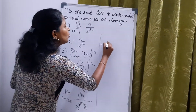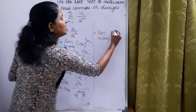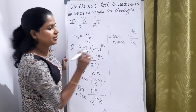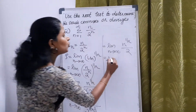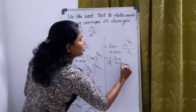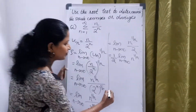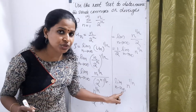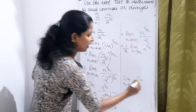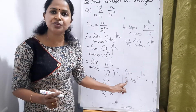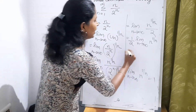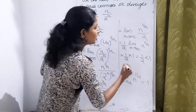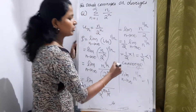That is equal to limit n tends to infinity of n raised to 1 by n, divided by 2. Since 1 by 2 is constant, we take it outside: 1 by 2 into limit n tends to infinity of n raised to 1 by n. The limit n tends to infinity of n raised to 1 by n is 1. So rho equals 1 by 2 into 1, which is 1 by 2. Since 1 by 2 is less than 1, the series converges.